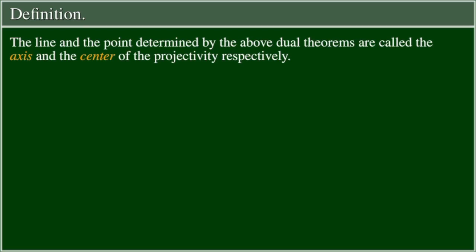Definition: The line and the point determined by the above dual theorems are called the axis and center of the projectivity, respectively.